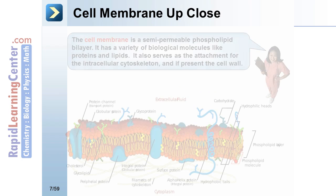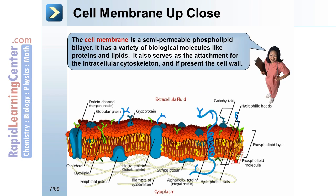Cell membrane up close. The cell membrane is a semi-permeable phospholipid bilayer. It has a variety of biological molecules like proteins and lipids. It also serves as the attachment for the intracellular cytoskeleton and, if present, the cell wall. This is a schematic of the cell membrane — take a good look at it and become familiar with it.